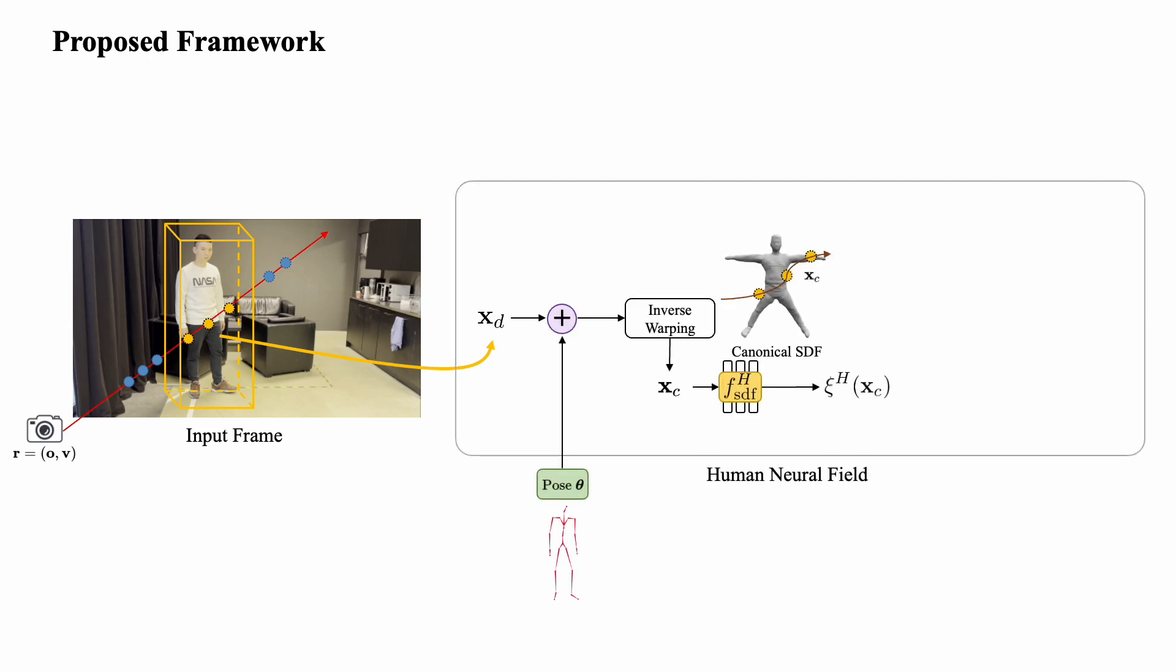they are first mapped to the canonical space of the human body according to the given skeletal deformations. The canonical coordinates are then fed to the human neural field for predicting the SDF and RGB values of the human body.